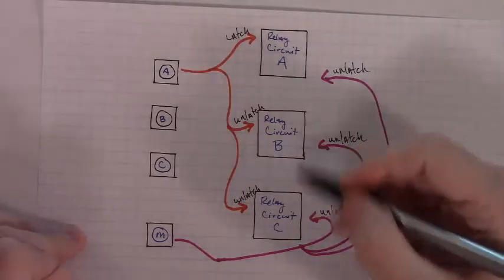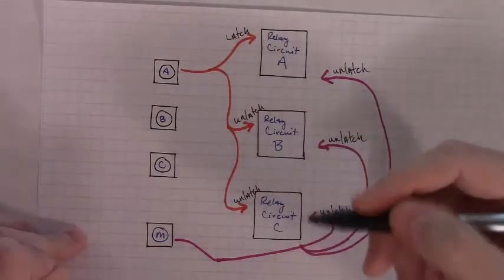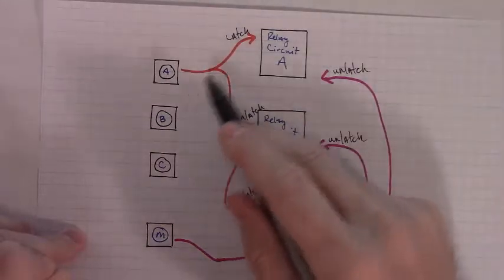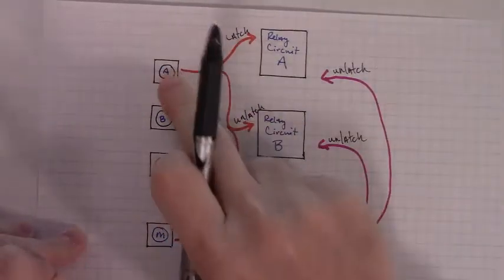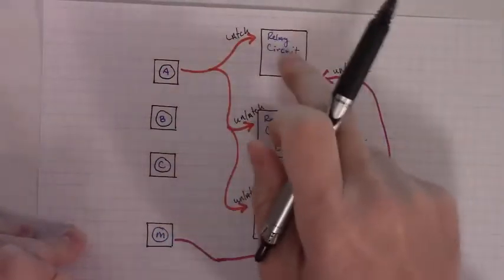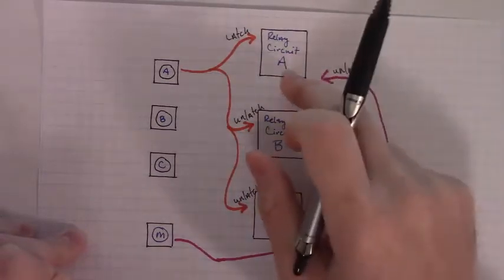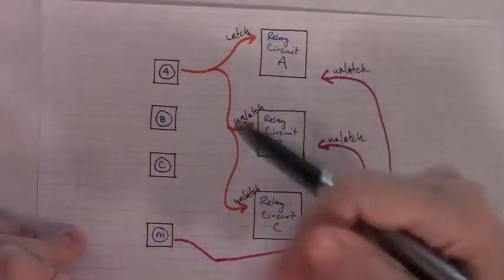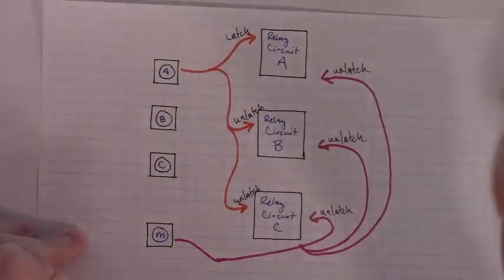Now, if they happen to not be on, it's still going to unlatch them, which there's no harm in that. It's kind of like if we push button A two times in a row, it has no effect on latching relay circuit A. It will still be on, and these will have been unlatch, but they weren't on anyway, so it doesn't matter.